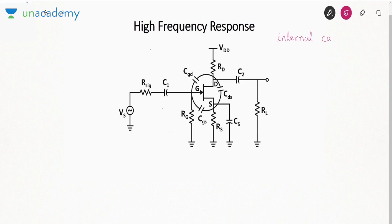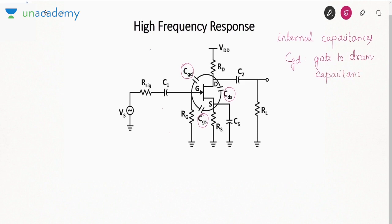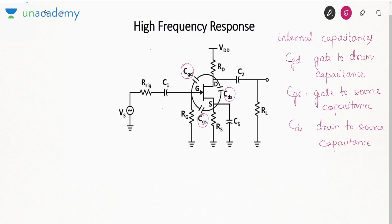For high frequency response, instead of coupling and bypass capacitors, we consider the internal capacitances of our JFET. From the figure you can see we have shown three capacitances: CGD (gate-to-drain capacitance), CGS (gate-to-source capacitance), and CDS (drain-to-source capacitance).